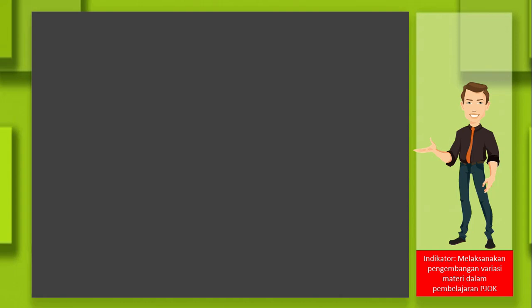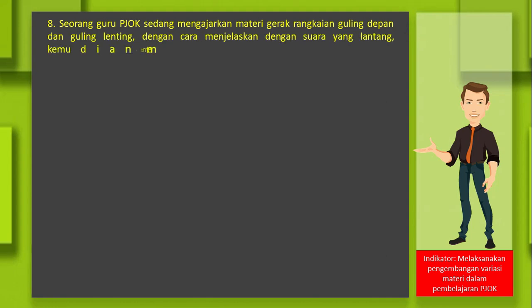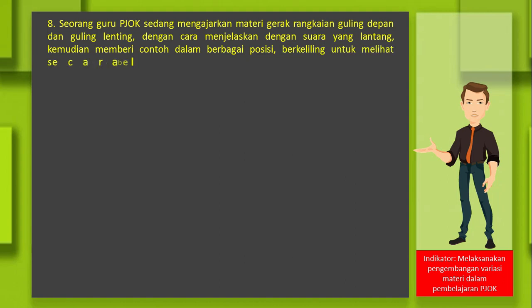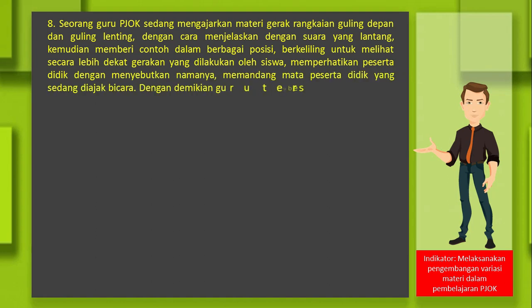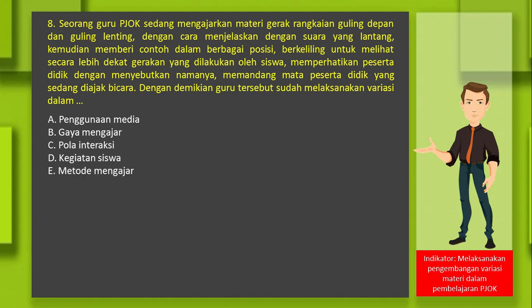Indikator berikutnya: melaksanakan pengembangan variasi materi dalam pembelajaran. Contoh soal nomor 8: seorang guru sedang mengajarkan materi gerak rangkaian guling depan dan guling lenting dengan cara menjelaskan dengan suara lantang, memberi contoh dari berbagai posisi, berkeliling melihat gerakan siswa, memperhatikan peserta didik dengan menyebutkan namanya, dan memandang mata peserta didik yang diajak bicara. Dengan demikian guru tersebut sudah melaksanakan variasi dalam: B. Gaya mengajar. Jawabannya adalah B: gaya mengajar.